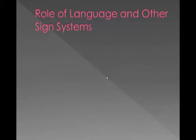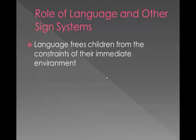What's the role of language and other sign systems in Vygotsky's theory? Vygotsky argues that language frees children from the constraints of their immediate environment. Without language, the only things you can refer to are those around you — if you want food, you can only point or cry. But if you have language, you can say 'want cookie' or 'want lunch,' which frees the child from the constraints of their immediate environment and allows them to talk abstractly about something they desire.